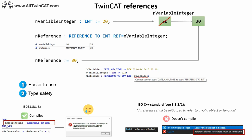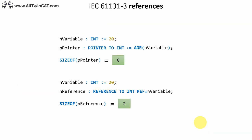The reference still has the mentioned advantages over pointers and should be preferred. You can do a sizeof on the reference and get the size of the referenced object — so here we have an integer that is 2 bytes and the sizeof of the reference is 2. If you do a sizeof on a pointer, you get the size of the pointer itself, not the size of the object it points to. So in a 64-bit system, the size of the pointer is 8 bytes.